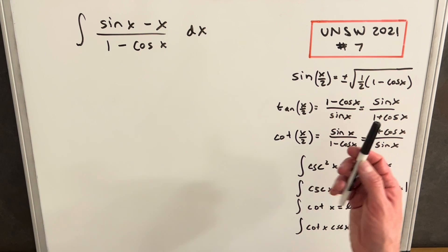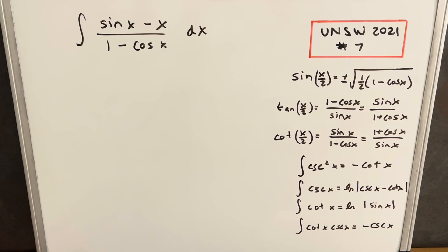Hey, we have here today another integral from the UNSW integration B 2021. This is problem number seven. We have the integral of sine x minus x over 1 minus cos x dx.